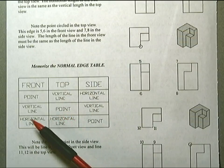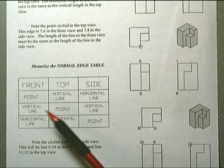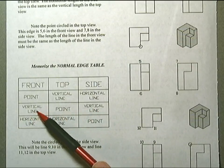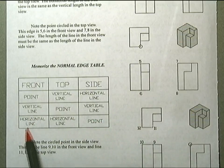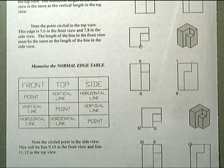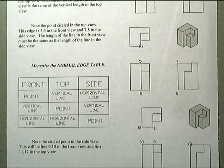A point in the side view creates horizontal lines in the adjacent front and top view. So memorize the chart.